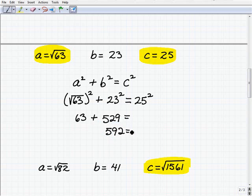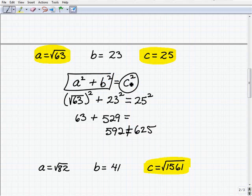All right. So now what we have to determine is 25 squared, 592, and it's not. Okay, 25 squared is 625. So because 592 does not equal 625, in other words, a squared plus b squared did not turn out being the same as hypotenuse squared, c squared. These cannot be the lengths of a right triangle.